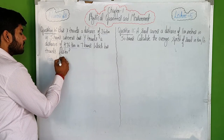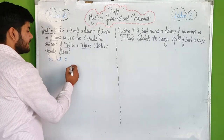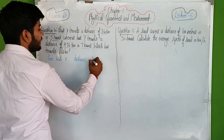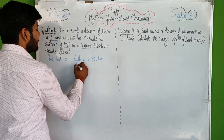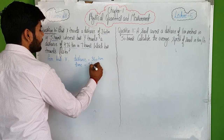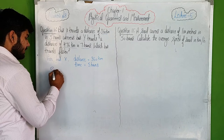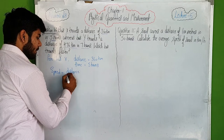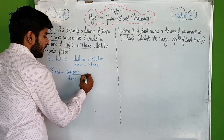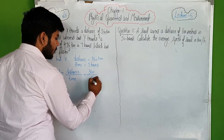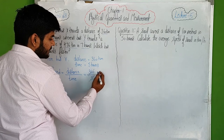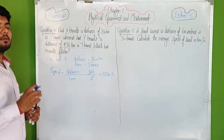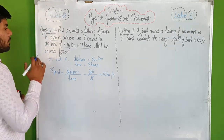For bus X: distance is 360 km and time is 5 hours. Speed equals distance upon time, so speed equals 360 upon 5, which gives us 72 km per hour. This is the speed of bus X.